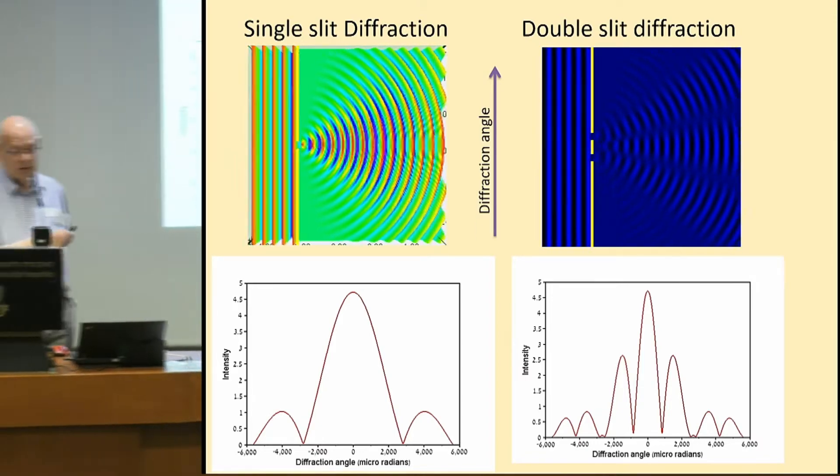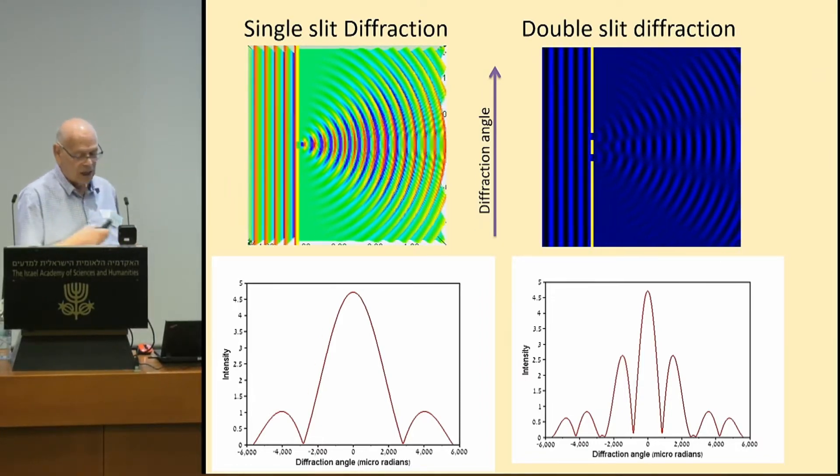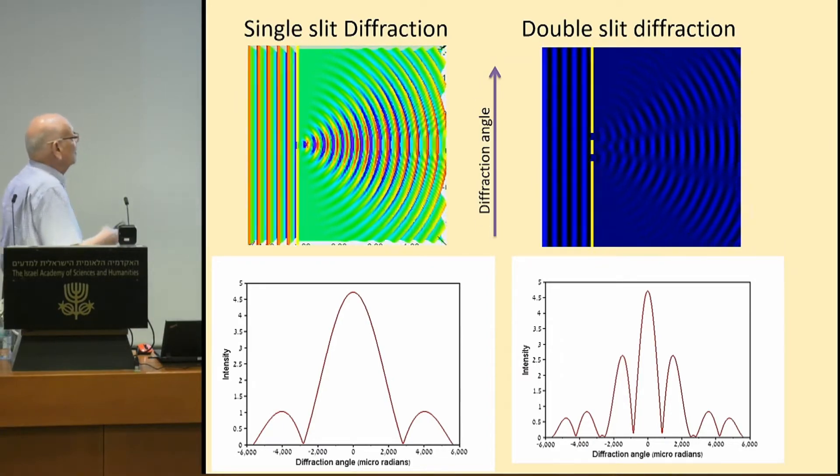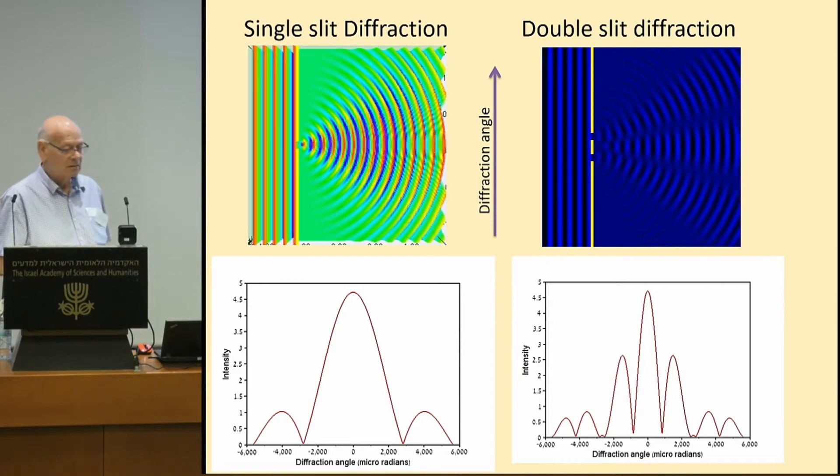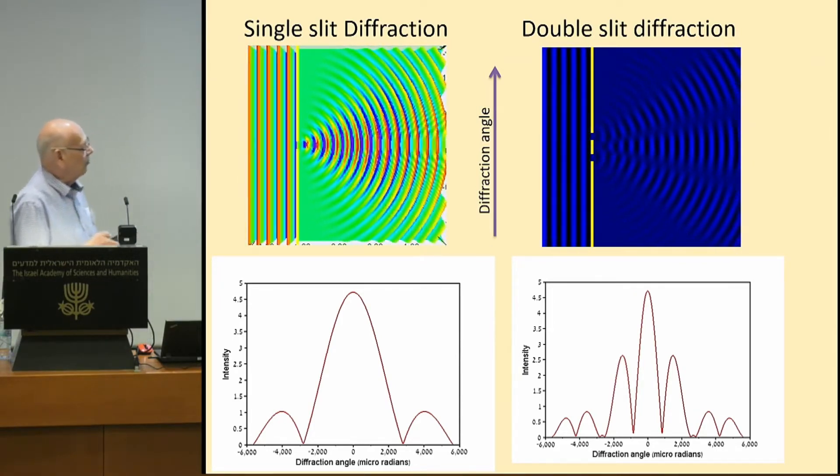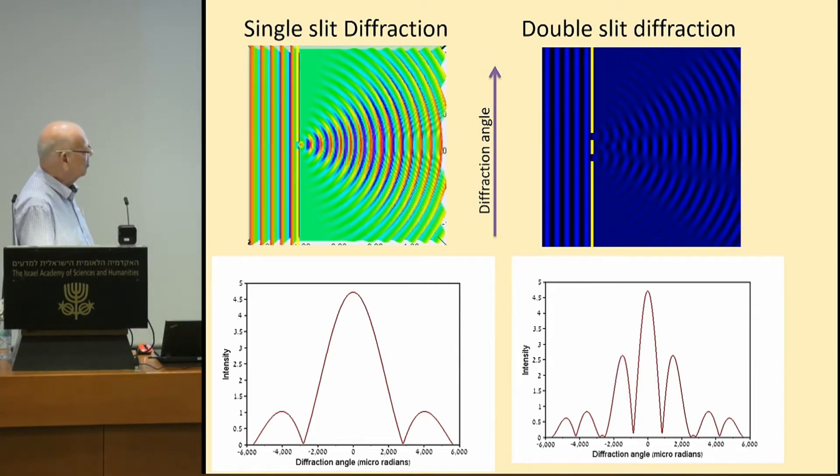It turns out that this simple expression can be calculated very accurately if we use a variety of physical methods. We can use Huygens principle. We can use Feynman path integrals. We can use other way of calculating. We end up with a simple result, something that looks like that.